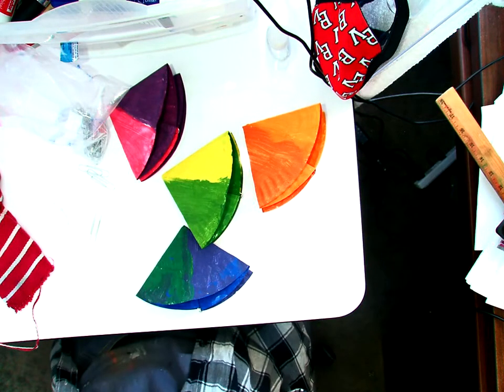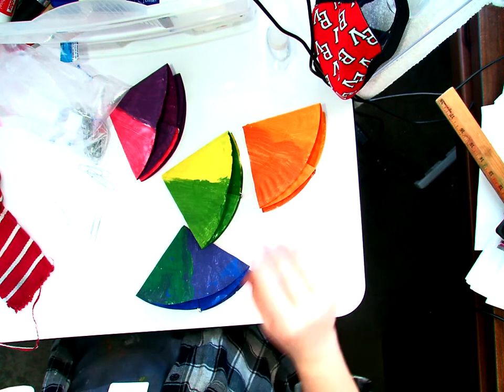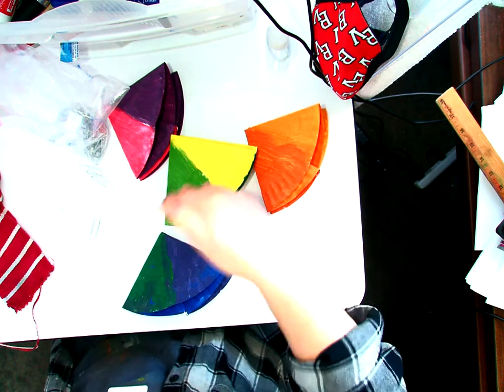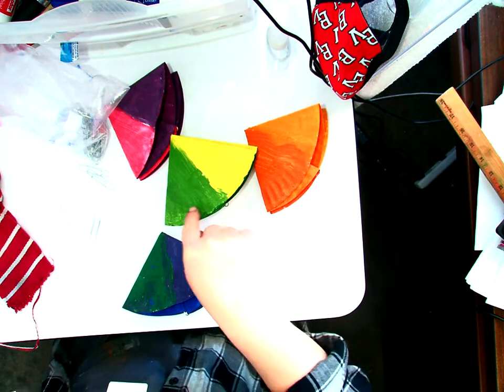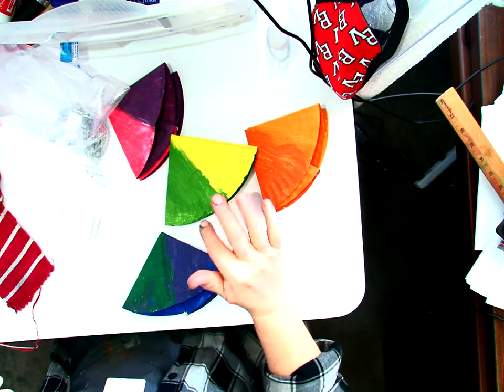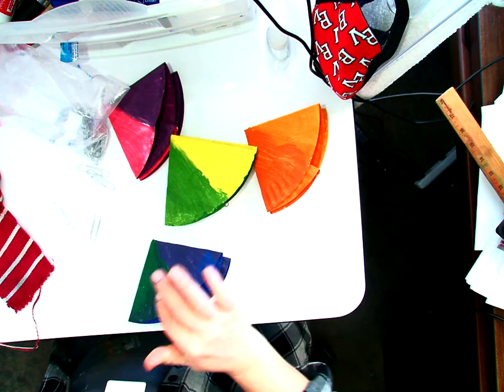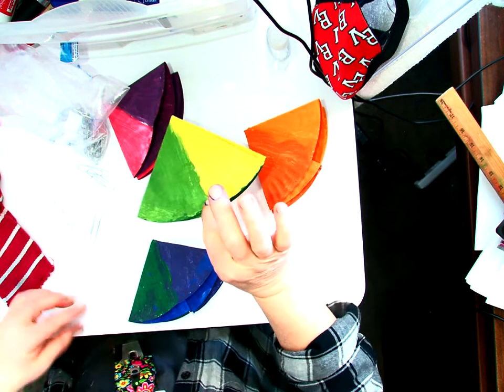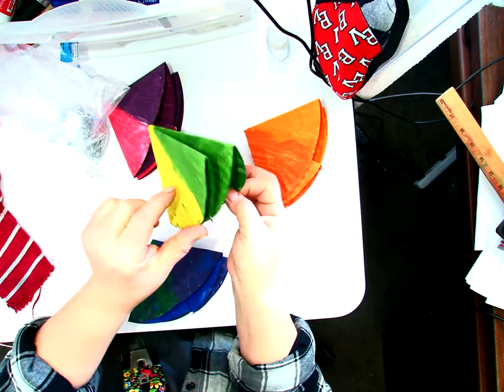Now what we're going to do is match these up in the color wheel order. That means we don't put green by red, we put green by blue-green, or we put yellow by yellowish orange. This is going to be the top and this is the bottom.